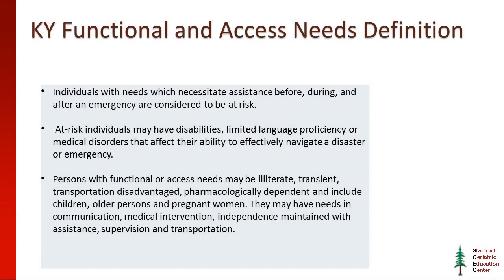For those of you who haven't heard the term 'functional and access needs,' we used to have 'special needs populations' and 'vulnerable needs populations.' There were so many ways of describing vulnerable persons. In the last few years, the Department for Homeland Security determined their definition and called it 'functional and access needs populations.'